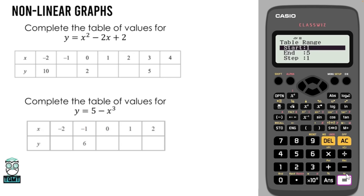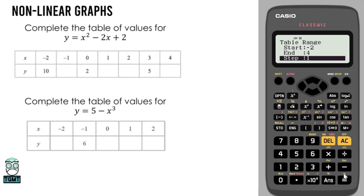Clicking equals, we want to put in our start and end number. The table goes from negative 2 to 4, so negative 2 is our start number, 4 is our end number, and that goes up in steps of ones. For most tables it typically always goes up in steps of ones — negative 2, negative 1, 0, 1, 2, 3, 4 — it goes up in ones each time.